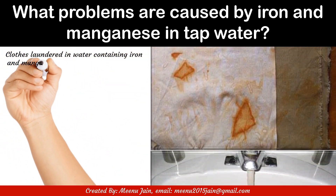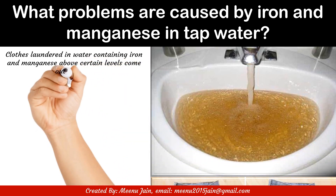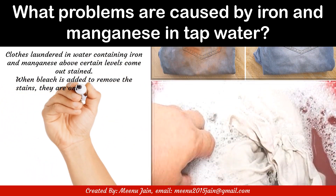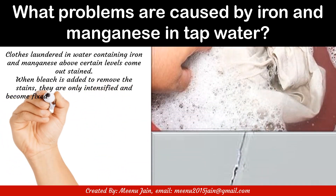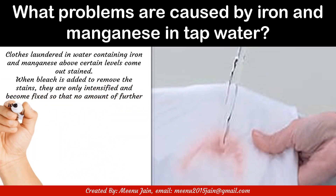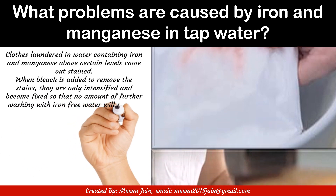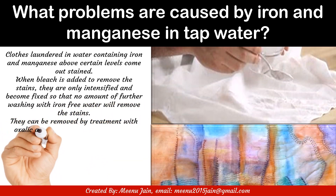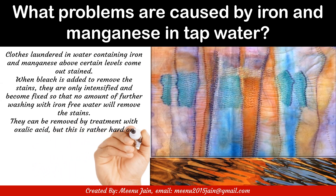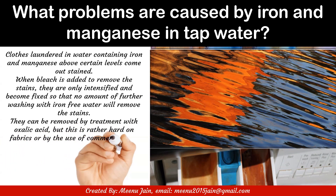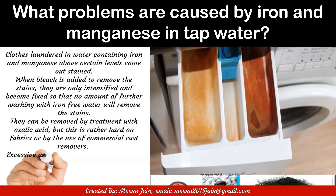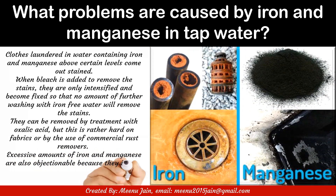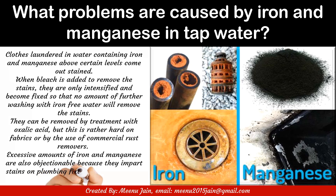Clothes laundered in water containing iron and manganese above certain levels come out stained. When bleach is added to remove the stains, they are only intensified and become fixed, so that no amount of further washing with iron-free water will remove the stains. They can be removed by treatment with oxalic acid, though this is rather hard on fabrics, or by the use of commercial rust removers.